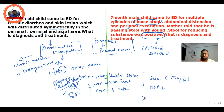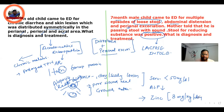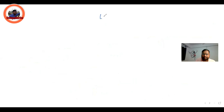The treatment of acrodermatitis enteropathica requires giving zinc at a slightly higher dose — that is 3 mg per kg per day.